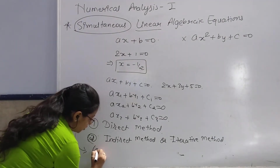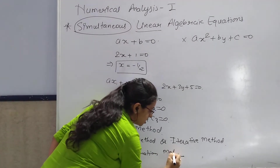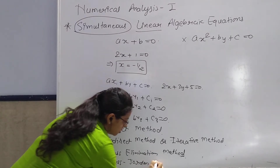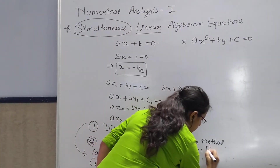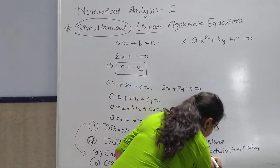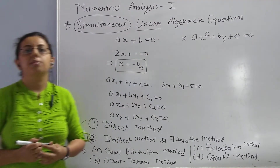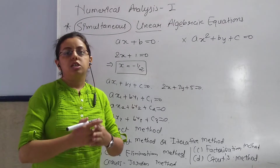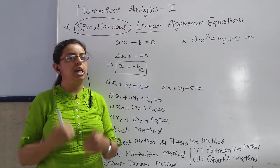In the direct method there are four methods. First method is Gauss elimination method. Second method is Gauss-Jordan method. Third method is factorization method. Fourth method is Crout's method. These four methods come under direct method.